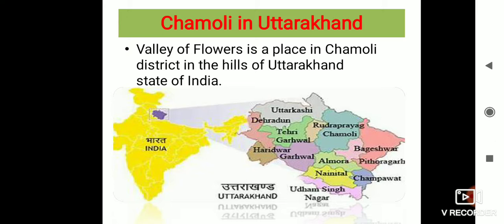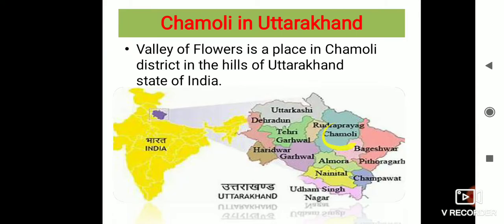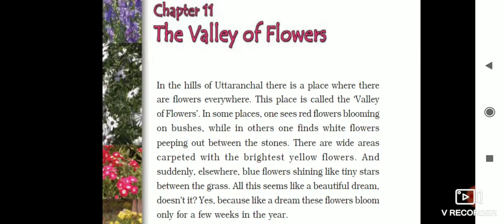The Valley of Flowers is a place in Chamoli district in the hills of Uttarakhand state of India. Uttarakhand has many districts, and one of these districts is the Chamoli district. In this Chamoli district, we have the Valley of Flowers. You must be able to locate Uttarakhand on the map of India.